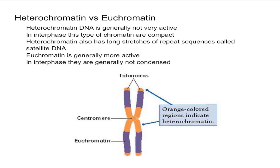Remember, interphase is where the cell spends most of its life. Because the region of DNA is very compact, this doesn't allow for the genes in that region to be transcribed very easily. One last thing to mention about heterochromatin is that it has a lot of repeat sequences of DNA called satellite DNA, and so heterochromatin has very few genes.